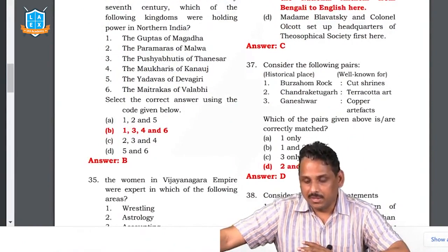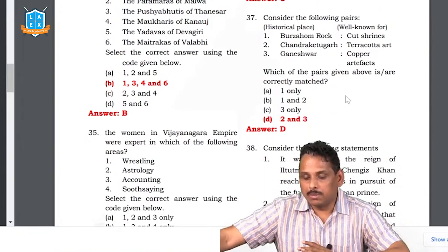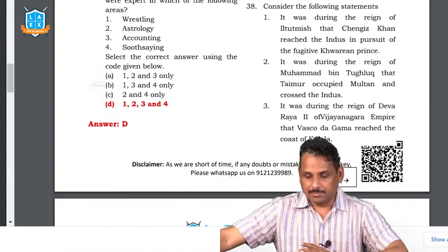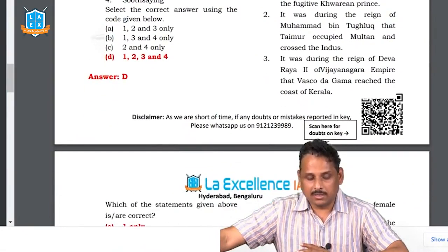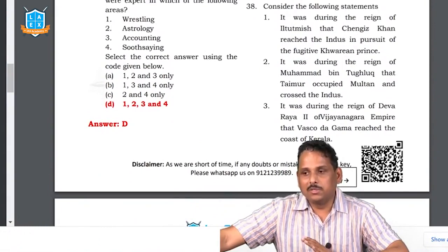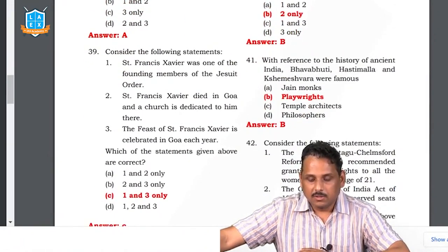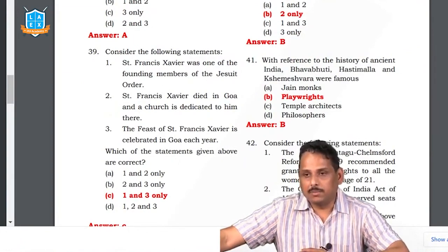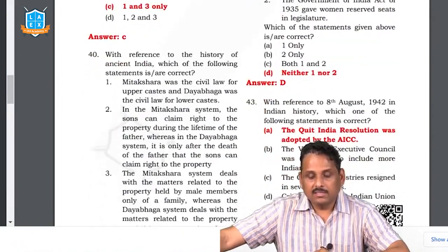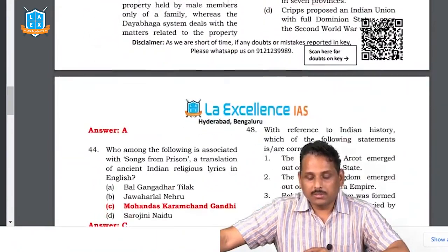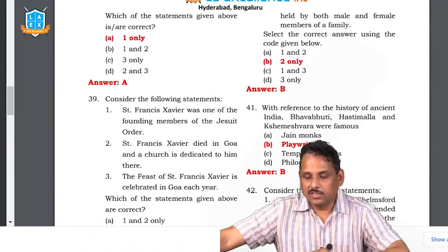Question 36 match-the-following: two and three are rightly matched — terracotta art and Ganeshwar copper artifacts. The answer is D. Question 37 from medieval India: during the reign of Iltutmish, Chengiz Khan reached the Indus in pursuit — whatever question is related to Chengiz Khan, that is likely going to be right. Question 38: Saint Francis Xavier did not die in India; he died in China — there is a church in Goa but the death of Xavier did not happen in India. So one and three are right. Question 40 is doubtful — seniors say there is no clearly right option, so the answer remains uncertain.